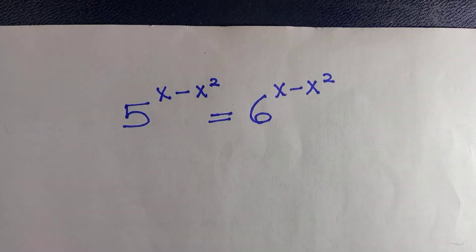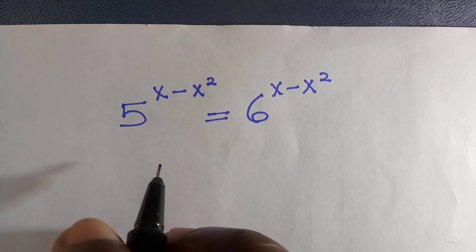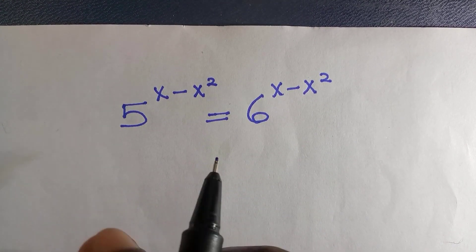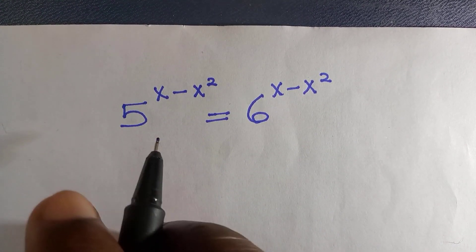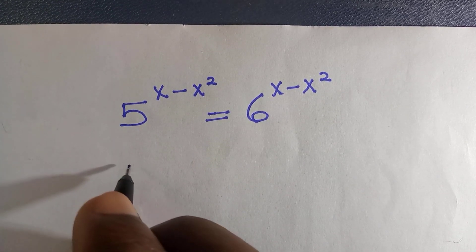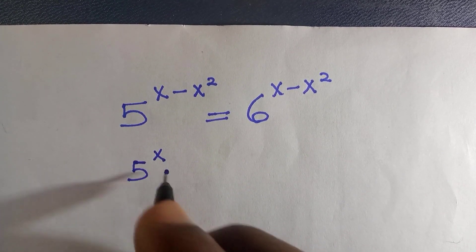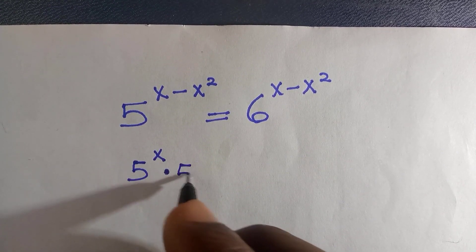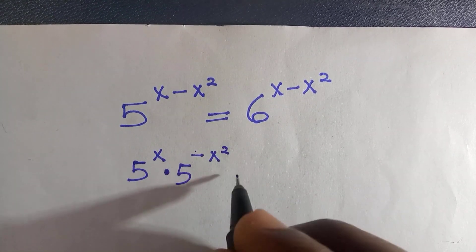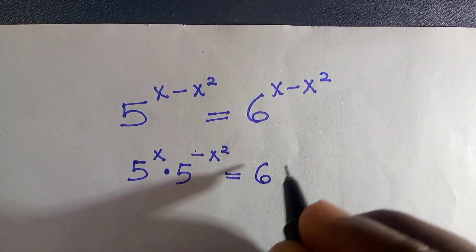Good day viewers, welcome again to this class. I want to show you how to find the value of x in this question. We have two different methods of solving this, but let's see the first method. We write five raised to the power of x, dot five raised to the power of negative x squared, equals two.